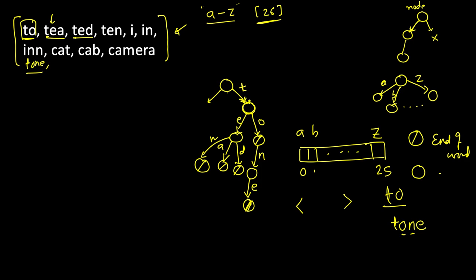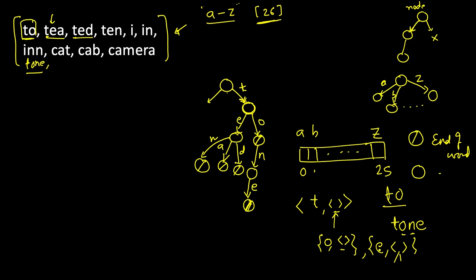If the number of characters is large, instead of having a fixed-size array you can use a hash map — whenever you encounter a new letter you insert it into the map. Initially it was empty. You found 't', a few words starting with 't', so you inserted 't' here with a pointer to the trie node. This node again will have entries for 'o' and 'e' in the hash map with pointers to their trie nodes, and so on. Here we are just using a fixed size of 26 children.